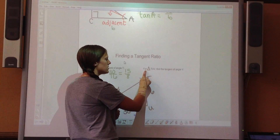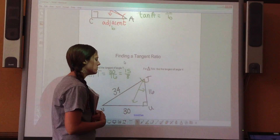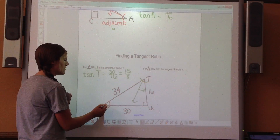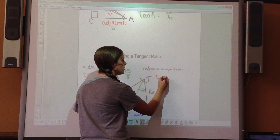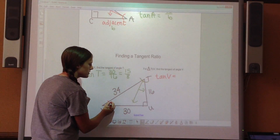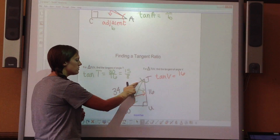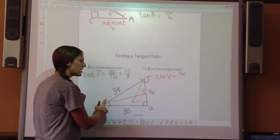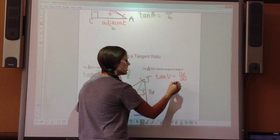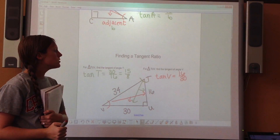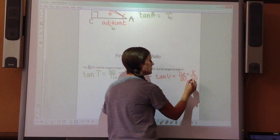Now it's your turn. For the same triangle TUV, find the tangent of angle V. Pause and try to find that ratio. Tangent of V equals opposite over adjacent. The side across from V is 16, and 34 is the hypotenuse so we don't use that — the adjacent side is 30. So tangent of V equals 16 over 30, which reduces to 8 over 15.